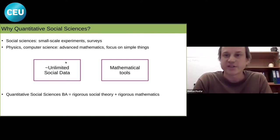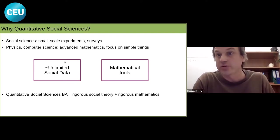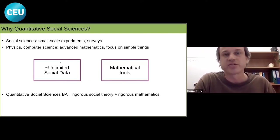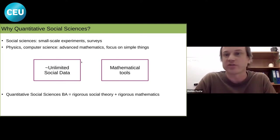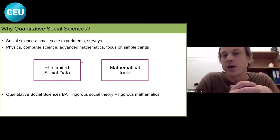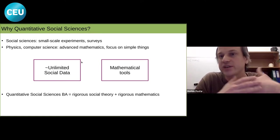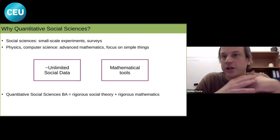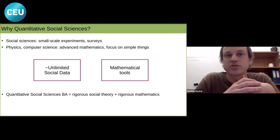Physics and computer science are also very well-established sciences — physics has been around forever and computer science is newer, but also well established. These sciences use advanced mathematics, but they focus on much simpler things than society. The behavior of an electron is much, much simpler than the behavior of a human being.